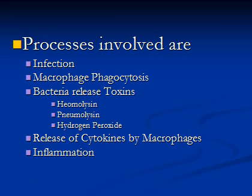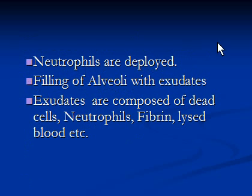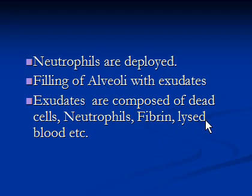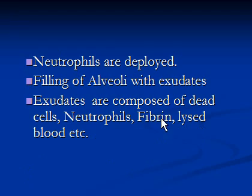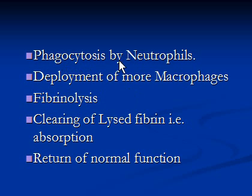In the meantime, neutrophils are deployed and start phagocytosis. The alveoli get filled with exudates, which are composed of dead cells, neutrophils, fibrin, and lysed blood — especially lysed red blood cells. It is this lysed blood which gives the brownish color to the sputum of the infected person. Fibrin comes from fibrinogen, which is a blood plasma protein and is part of the healing process.